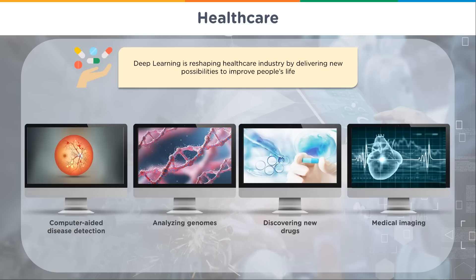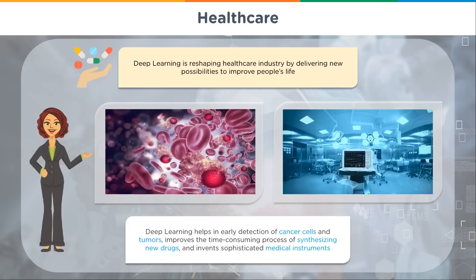Medical imaging is another huge area. When you get an MRI or a CAT scan, doctors can spend a long time taking careful measurements — most of that is done by hand. But as we apply deep learning, it can do a lot of that work and do it uniformly from one hospital to the next, meaning the industry continues to progress and you get better results. Deep learning also helps in early detection of cancer cells and tumors, and improves the time-consuming process of synthesizing new drugs.